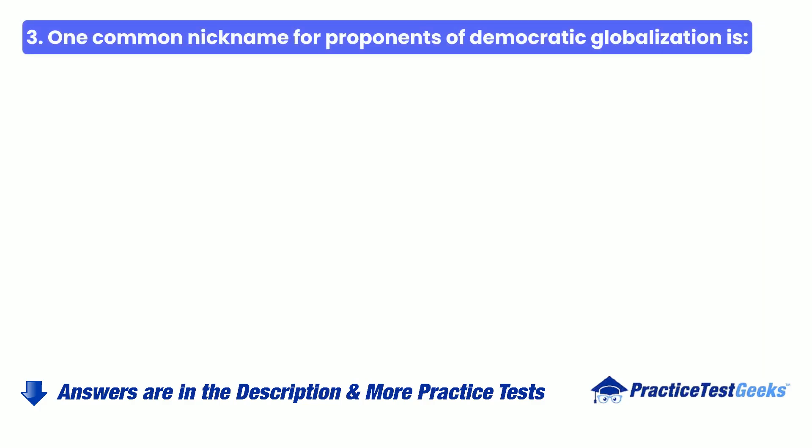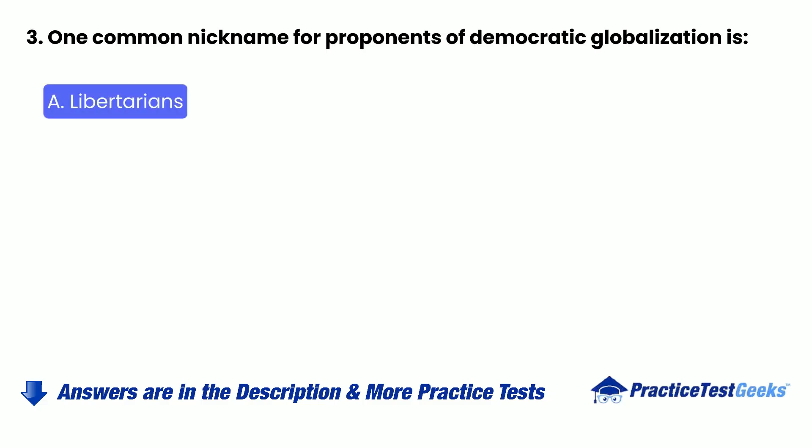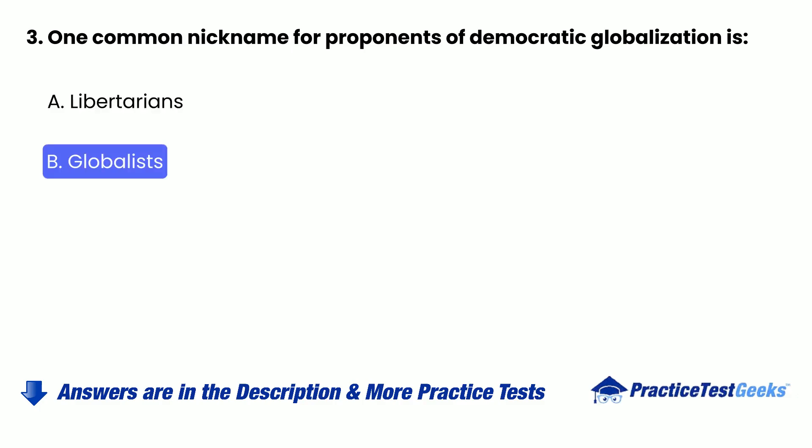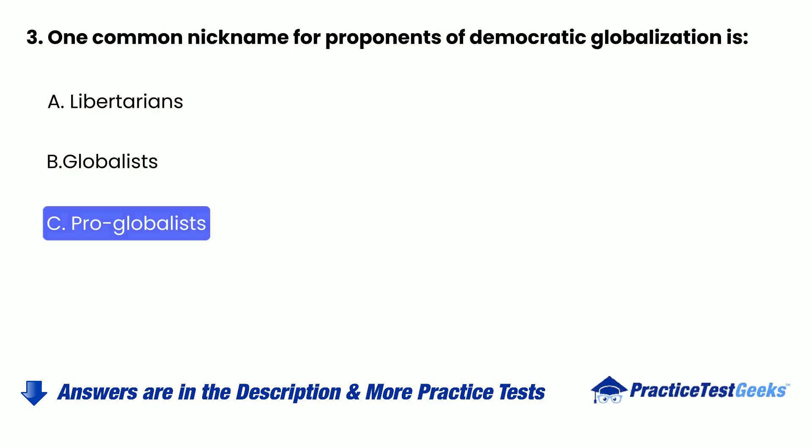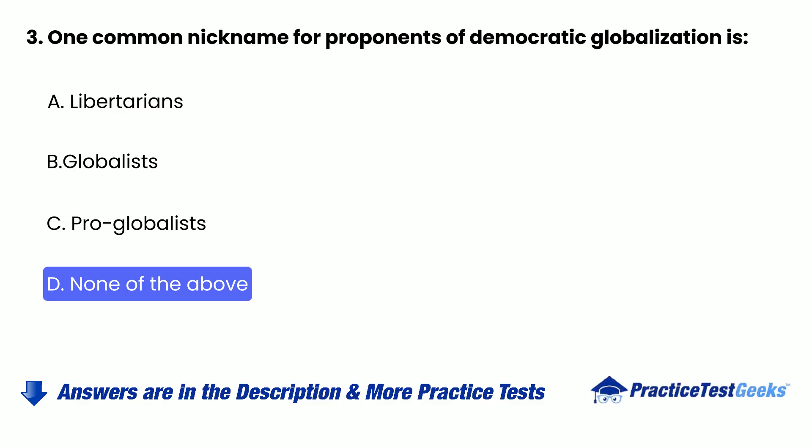Question 3: One common nickname for proponents of democratic globalization is — A. Libertarians, B. Globalists, C. Pro-Globalists, D. None of the above.